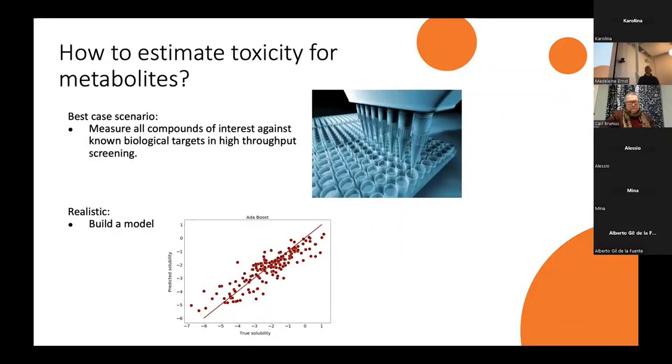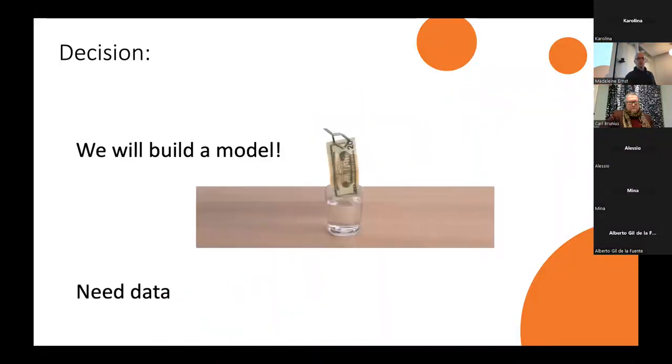So how do we estimate toxicity of metabolites? Best way would be to measure it all, but it's an expensive thing to do. So instead, we're building models. Basically, it costs a lot of money. With models, we can have a quick fix on estimating that.